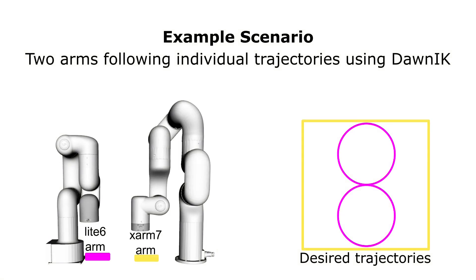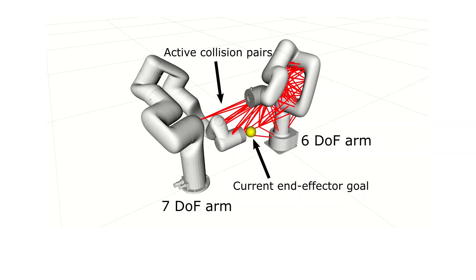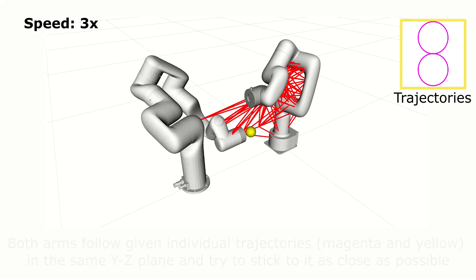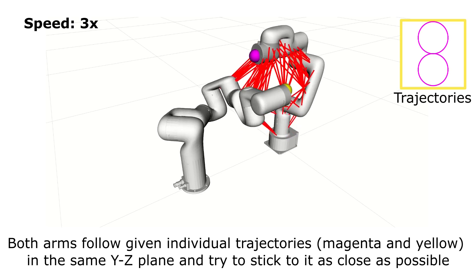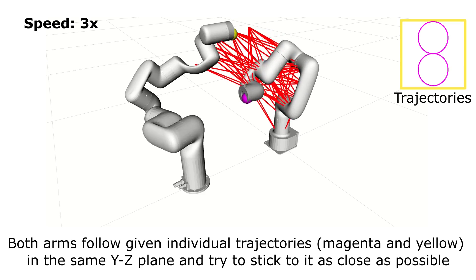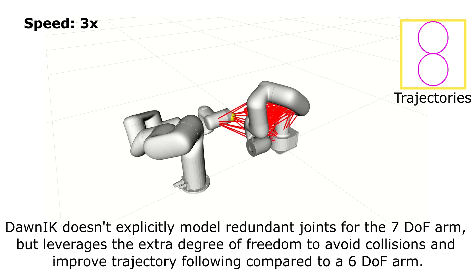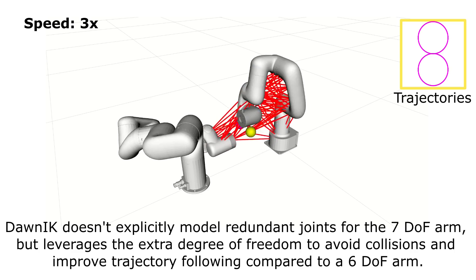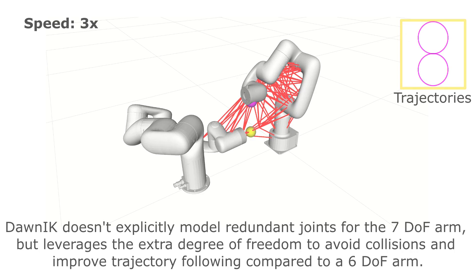Here we use Don IK to enable two arms to follow their respective trajectories while avoiding collisions with each other. We compute collision distances between the links of the two arms. Link pairs that are quite close are termed active collision pairs and are shown linked to each other in red. Even though Don IK does not explicitly model the redundant joint, it leverages the extra degree of freedom of the 7-DOF arm to avoid collisions and improve trajectory tracking compared to the 6-DOF arm.